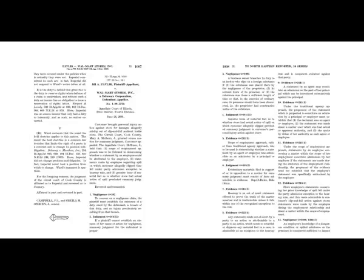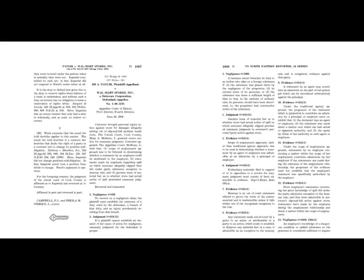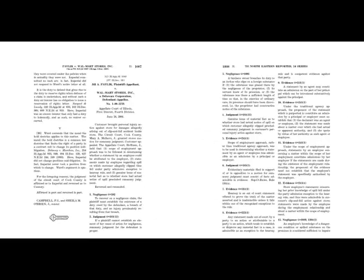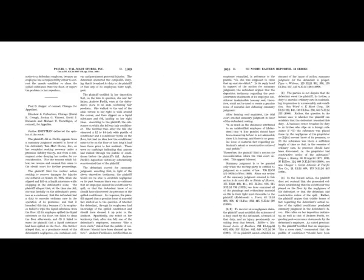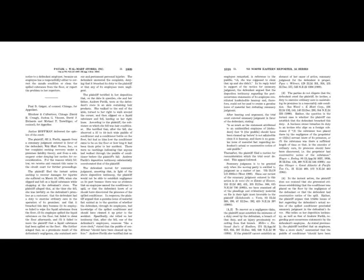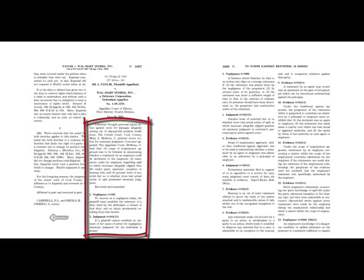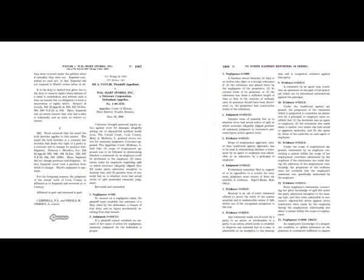Here are the first two pages of a case published in a West print reporter — the Northeastern Regional Reporter. The first thing you see is the West key, which marks the beginning of the case in print. After that are references to parallel citations and then the official caption for the case. Everything you see after the official caption of the case and up to the line are editorial enhancements added by West editors.